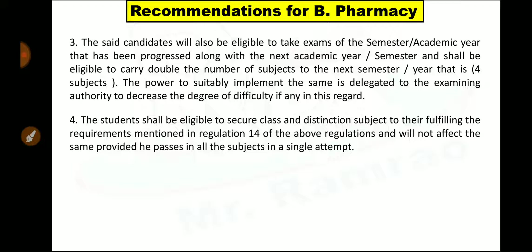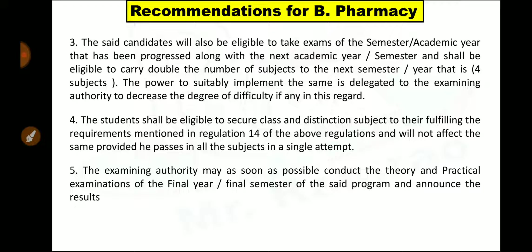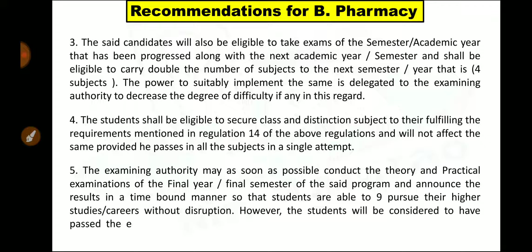This means if you want to get first class, you have to get more than 60% marks; if you want to get distinction, you have to get more than 75% marks as per Regulation 14. The fifth point is: the examining authority may, as soon as possible, conduct the theory and practical examinations of the final year or final semester of the said program and announce the results in a time-bound manner so that students are able to pursue their higher studies or careers without disruption.